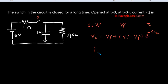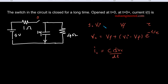The current through the capacitor with voltage Vz across it is C·dVz/dt. This is the way we are going to solve this problem, and now we will see its values.